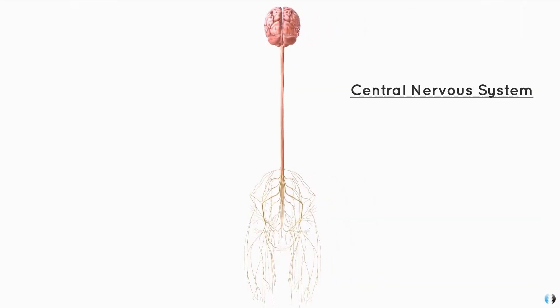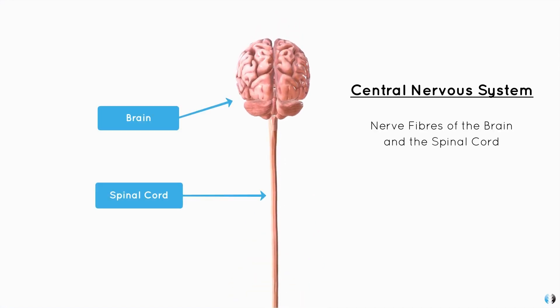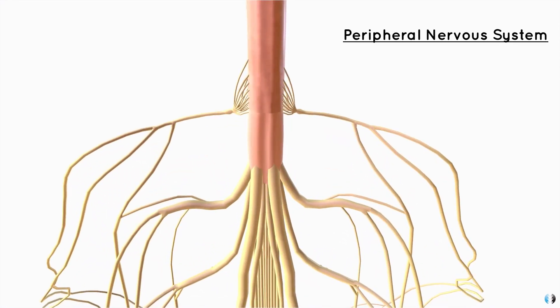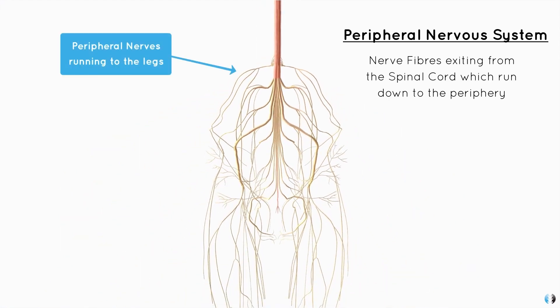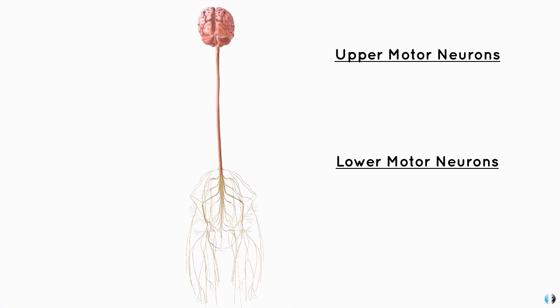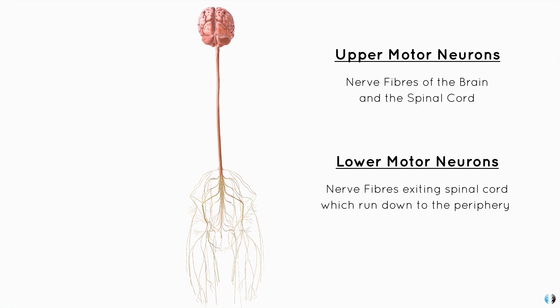Let's start with some basics. First we have the central nervous system, which is the nerve fibres of the brain and the spinal cord. We then have the peripheral nervous system — the nerve fibres which exit from the spinal cord and run down to the periphery of the body, for example our arms and legs. You will sometimes also hear the divisions of upper motor neurons and lower motor neurons. Upper motor neurons originate in the brain and run down the spinal cord, whereas lower motor neurons exit the spinal cord and innervate muscles, glands and the skin throughout the body.